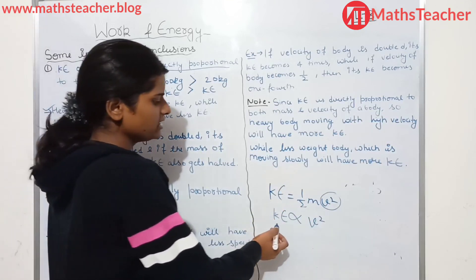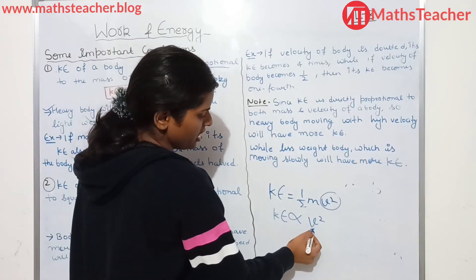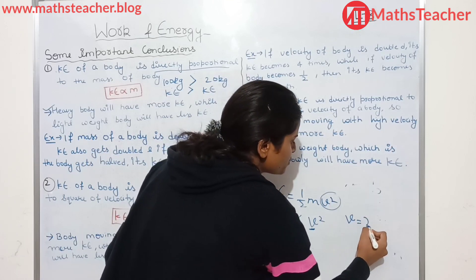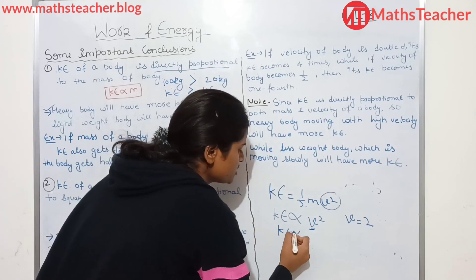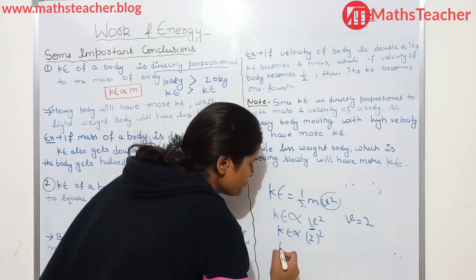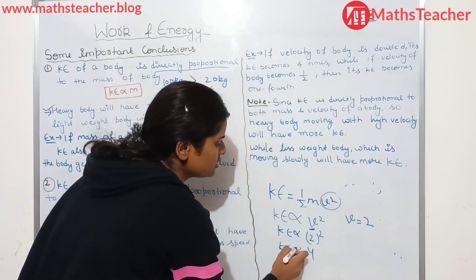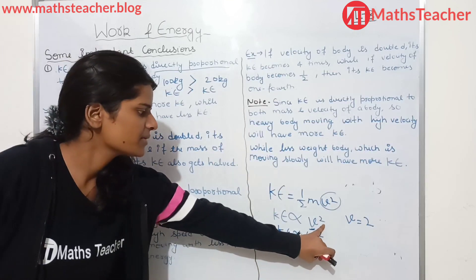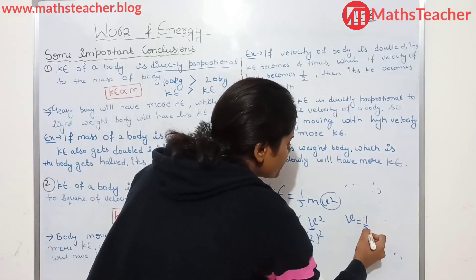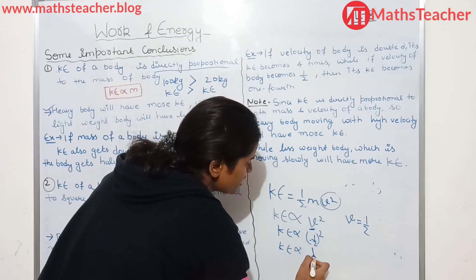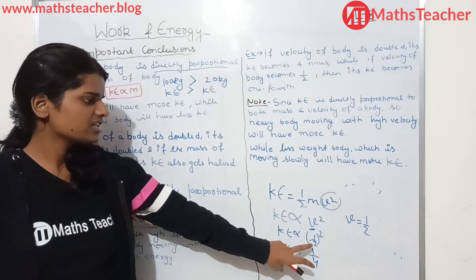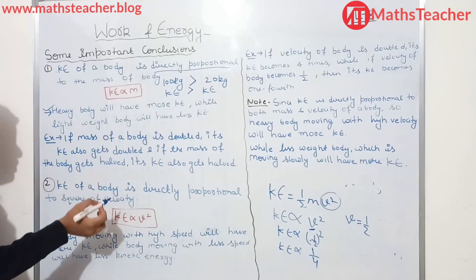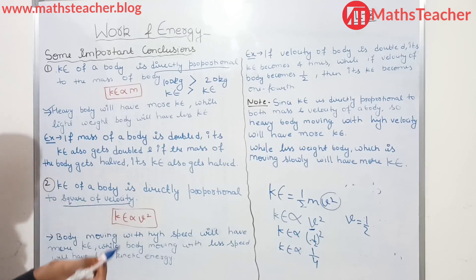Pay attention here — there will be a mistake. You will not give attention to V square. V is not written alone — it is V squared. If you double the body's velocity, kinetic energy increases by the square factor: it will become 4 times. Kinetic energy of a body is directly proportional to the square of the velocity.